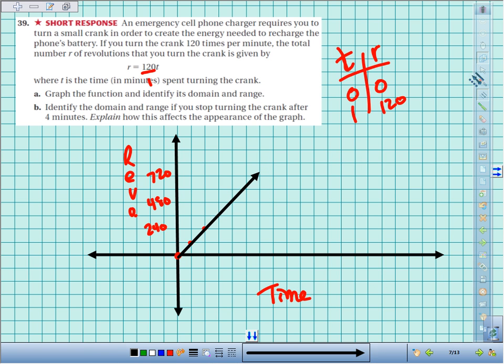The domain: what can I plug in for my time? I can plug in any time greater than or equal to zero. I just can't have negative time. And my range: the lowest number of revolutions is zero, and then it could go up and up and up depending on how long I crank this thing. So the revolutions r is also greater than or equal to zero.